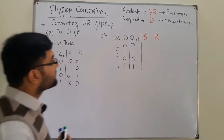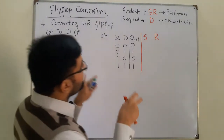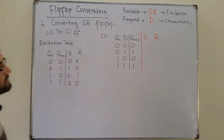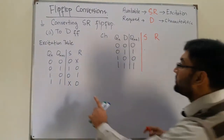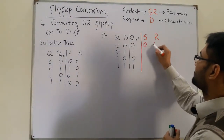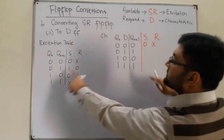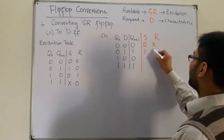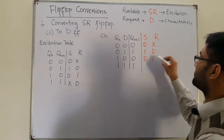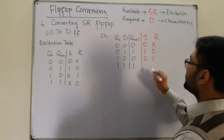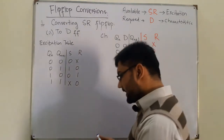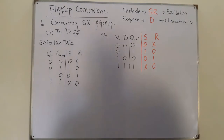We match the Qn and Qn+1 from the characteristic table of the required flip-flop with the excitation table of the available flip-flop. When you have 0→0, you have S=0 and R=don't care. When you have 0→1, you have S=1 and R=0. When you have 1→0, you have S=0 and R=1. When you have 1→1, S=0 and R=don't care. Now find the equations for S and R.